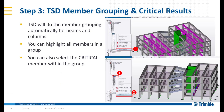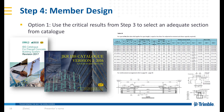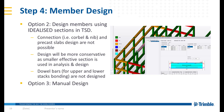Step 3: TSD member grouping and critical results. TSD will do the member grouping automatically for beams and columns. You can highlight all members in a group. You can also select the critical member within the group. You create an envelope to show the results of the critical member in the open load analysis view. Step 4: member design. Option 1: use the critical results from step 3 to select an adequate section from catalog. Option 2: design members using idealized sections in TSD. Connection and precast slab designs are not currently possible. Design will be more conservative as a smaller effective section is used in analysis and design. Dial bars for upper and lower stack bonding are not designed.